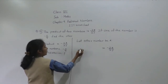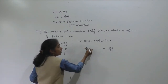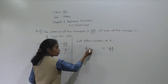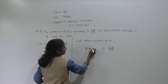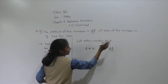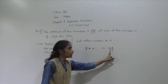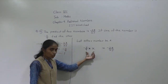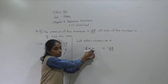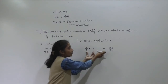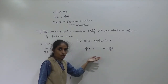One number is given as minus 5 upon 9. We have to show multiplication here. The other number we consider as X. So: one number is minus 5 upon 9, other number is X, and their product is minus 28 upon 27. Understand how to write this.